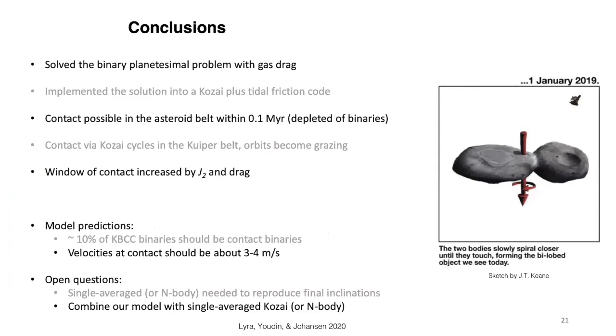We find that contact via Kozai cycles in the Kuiper belt is possible. The orbits become grazing, but the window of contact is narrow. However, the window of contact is increased by the permanent quadrupole and the drag force.